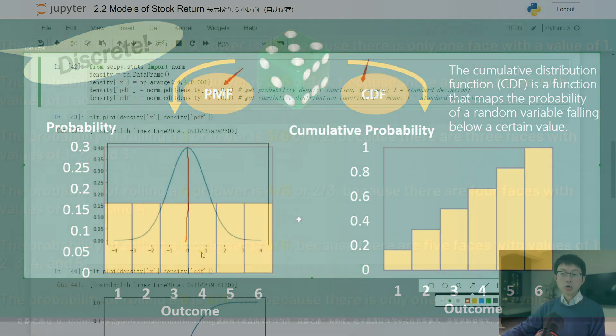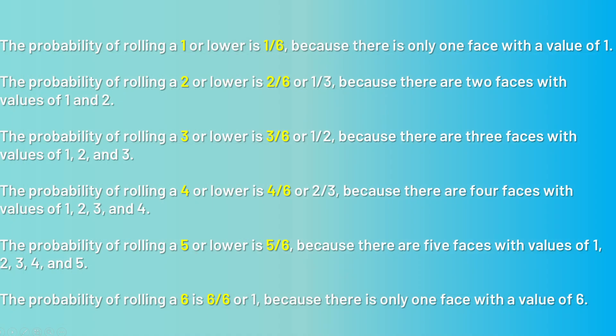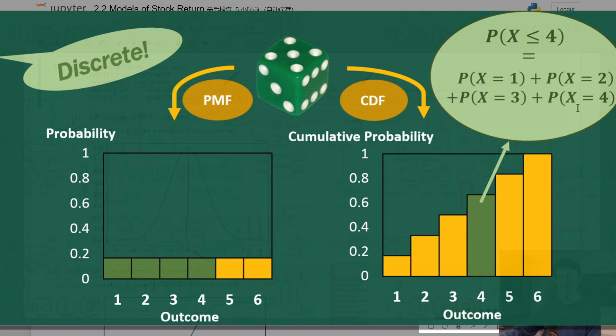Because there is only one face with the value of 1, the probability of rolling a 2 or lower is 2/6 or 1/3 because there are two faces with value of 1 and 2. As you increase the target value, the probability of rolling that value or lower increases as well. The CDF for this die would be a step function that starts at 0 for values below 1, increases in increments of 1/6 for each value from 1 to 5 and ends at 1 for a value of 6.